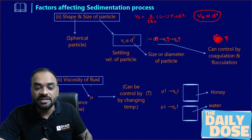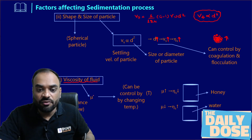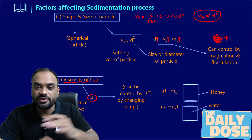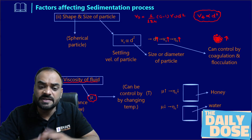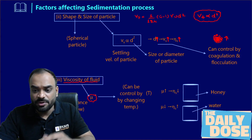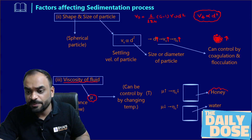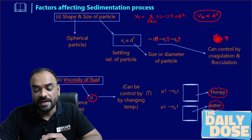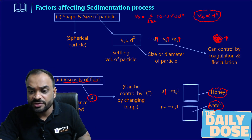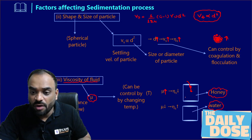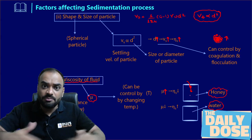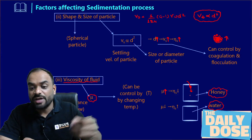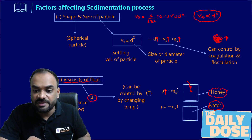The last factor is viscosity of fluid — specifically dynamic viscosity, which is the resistance to flow. Consider two examples: honey and water. In which case is dynamic viscosity high? In honey, dynamic viscosity is very high. So any particle dropping inside honey will settle very slowly because there is more resistance. Due to that reason, the sedimentation efficiency will get reduced.